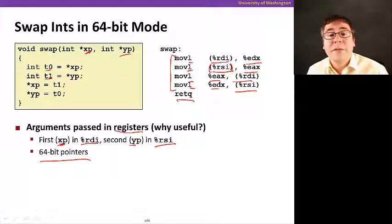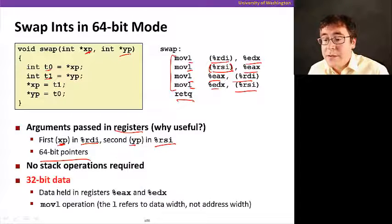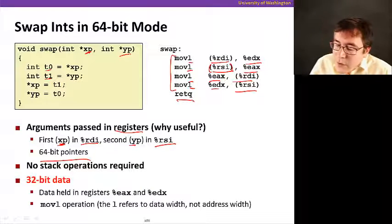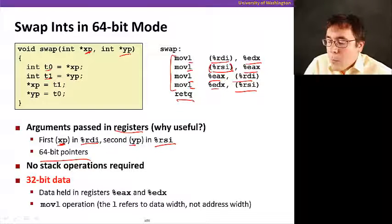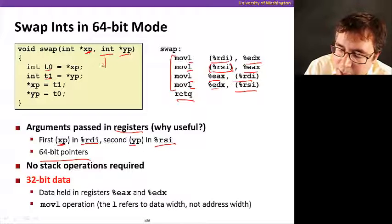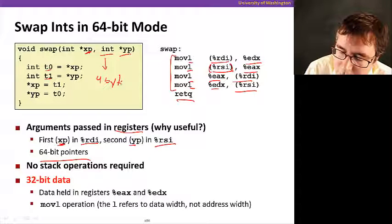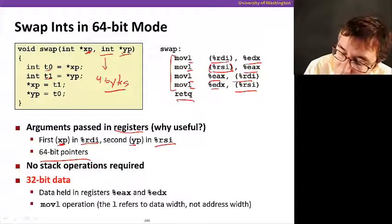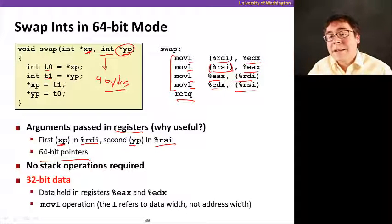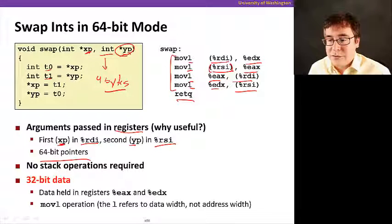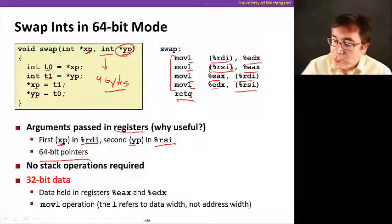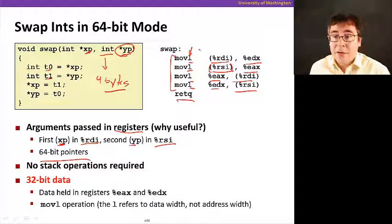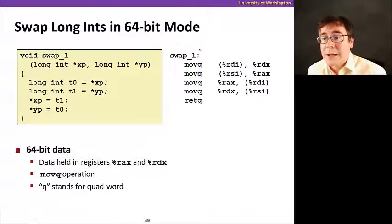And because, the main reason it's simpler is because we don't have to use the stack at all. No stack operations required. Note that we still moved 32 bits worth of data. Why is that? Well, because this integer here happens to be 4 bytes long. Even though the pointer itself is 64 bits, the unit of data that it points to is a 4 byte integer. And we also used moveL still, because we're moving 4 bytes worth of data. We're still using the same type of instructions.